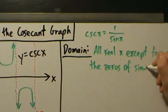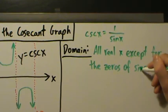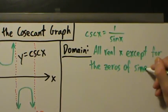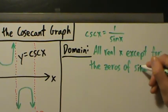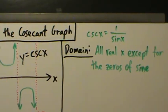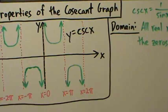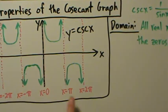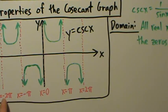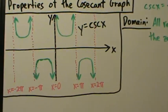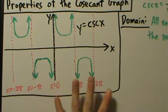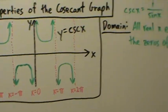A zero of a function — it's a precalculus or college algebra term that just means a value of x that makes the function equal to zero. For example, sine of pi is zero, sine of 2π is zero, sine of 0 is zero, sine of negative pi is zero, sine of negative 2π is zero. So 0, π, negative π, 2π, negative 2π are all zeros of the sine function.